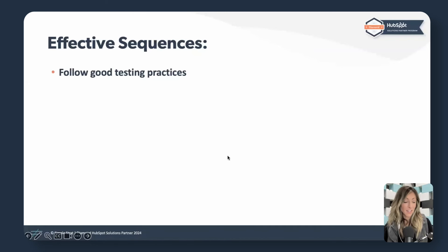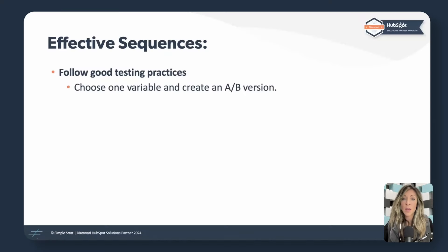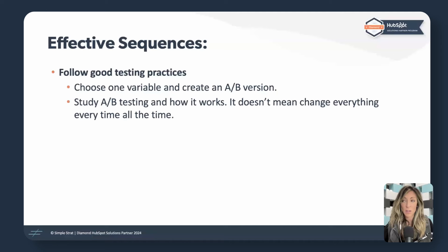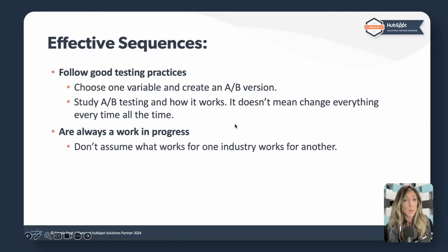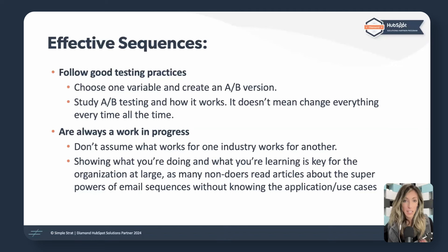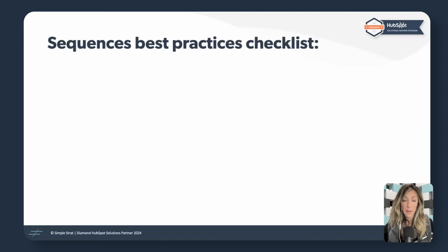Good testing practices are really important. When I hear 'our sequences aren't working,' I ask how they're testing them — and often the answer is they're not really doing it well. Any good test has one control and one variable. HubSpot AB testing inside sequences now makes that possible, but naming your sequences and templates becomes a big deal. Go study how AB testing actually works and how to do it effectively. Always communicate what you're learning and testing, because executive leaders — especially those not in the doing — need that visibility. The cycle is: test, share, and repeat.